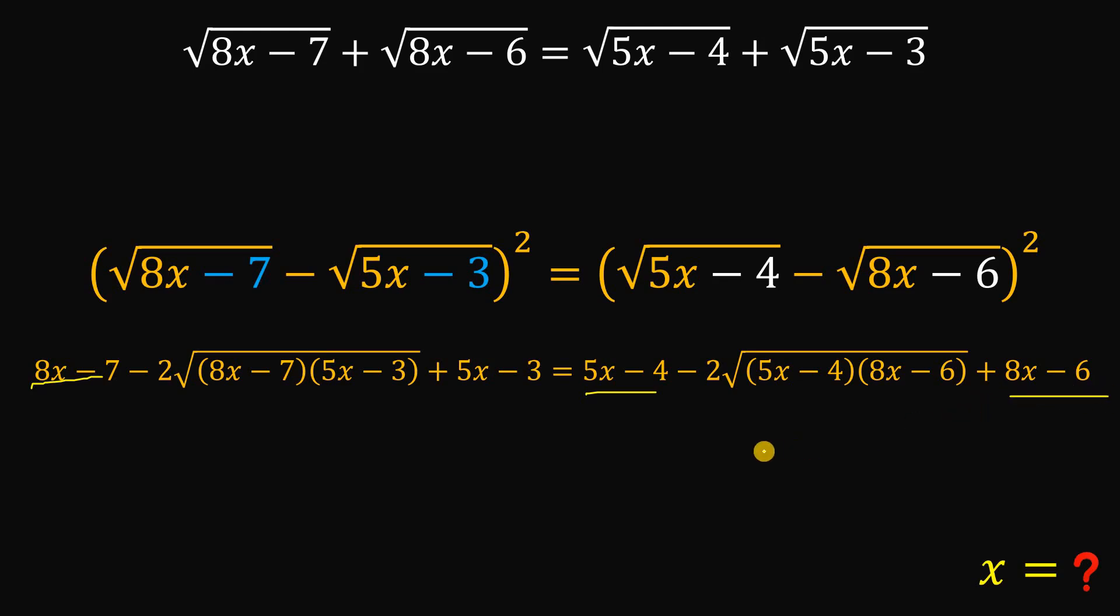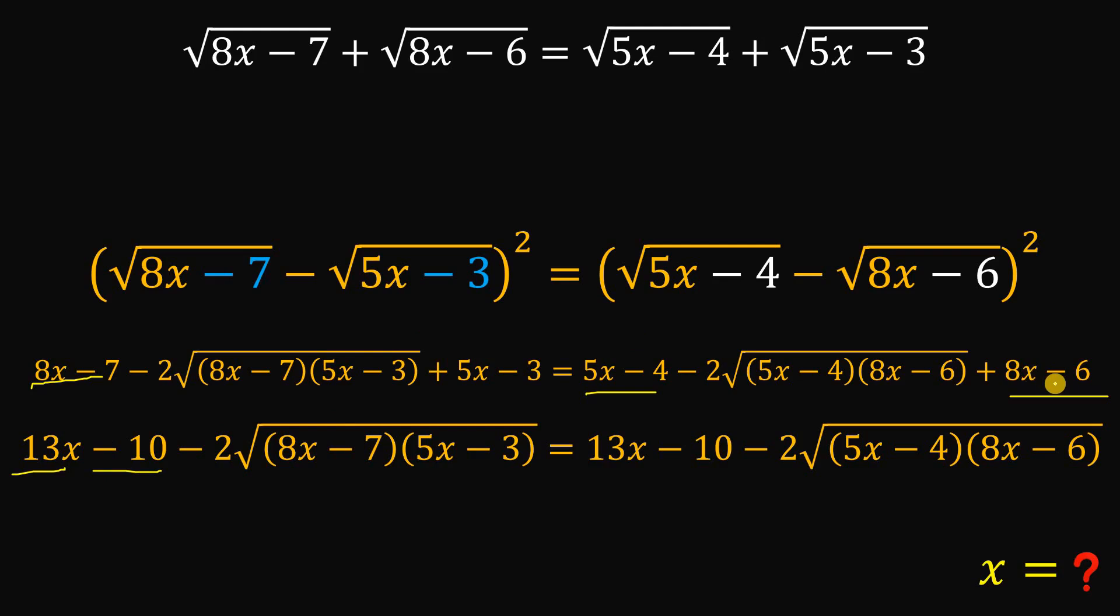Now, here comes the good thing. Because if we add similar terms, we get something like 5x plus 8x, 13x. And negative 7 and negative 3 is negative 10. We will get the same thing on the right-hand side. We have here 13x and negative 10. So if we subtract 13x on both sides and we add 10 on both sides, they are just 0.